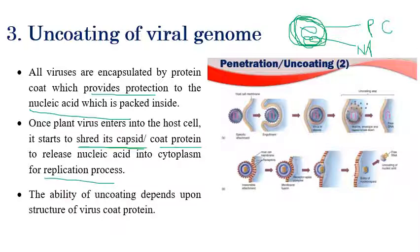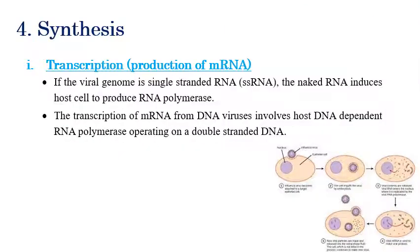The ability and speed of uncoating depends upon the virus coat protein structure — whether it is rod-shaped, helical-shaped, or icosahedral-shaped. After attachment and uncoating, the nucleic acid alone is released into the cytoplasm. This viral nucleic acid is then ready for the next step.